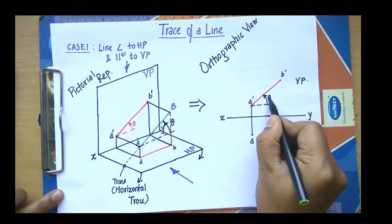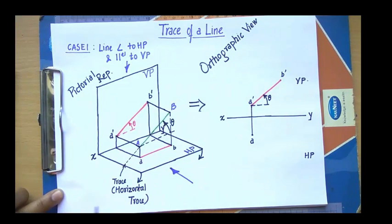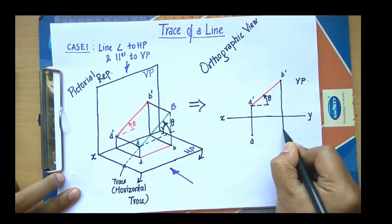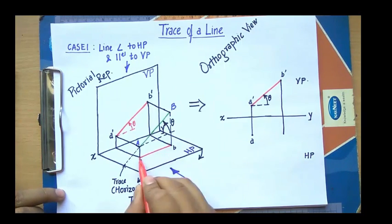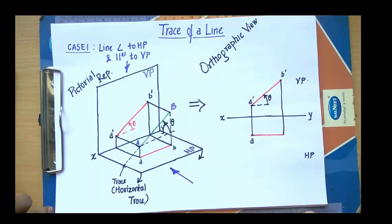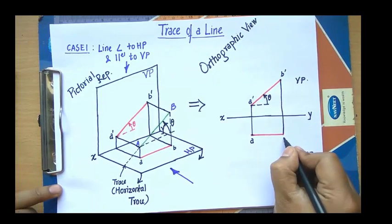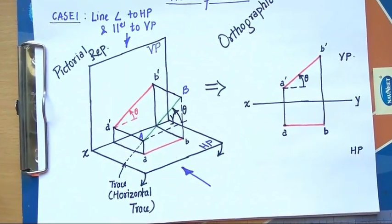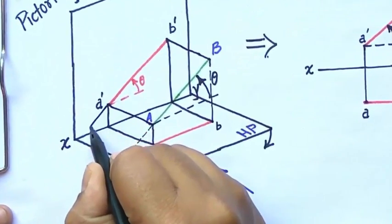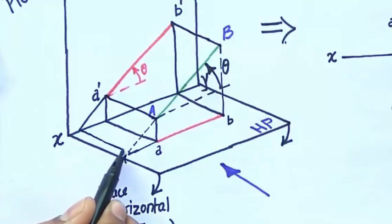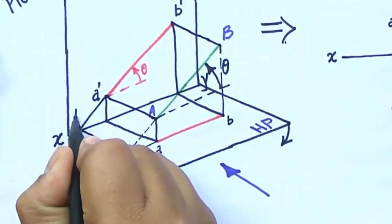We have point B' and this inclination is theta. We are going to find this trace. Produce a line starting from B' downward. The AB line in the top view is absolutely parallel to this XY line. Now we are supposed to find the exact location where, on extending this inclined line, it intersects the horizontal plane. If I extend this line from here it is going to cut somewhere here, and extending from the other side it intersects somewhere here. That point is named H.